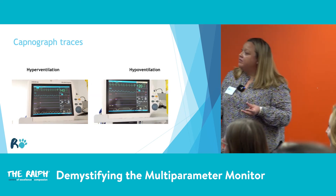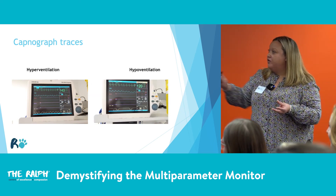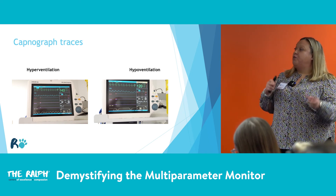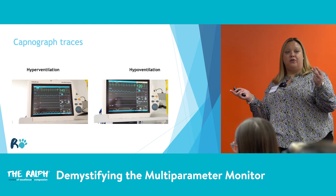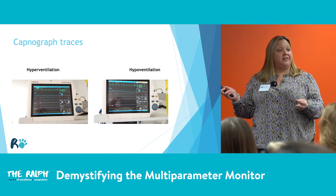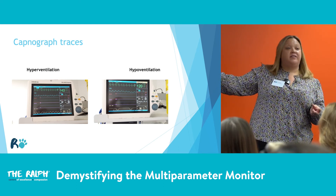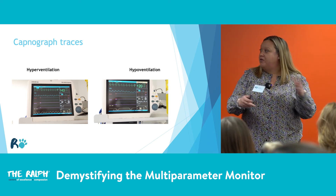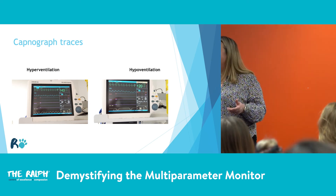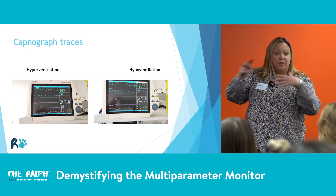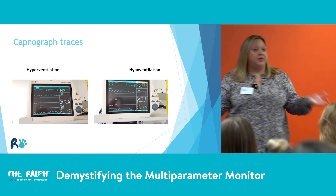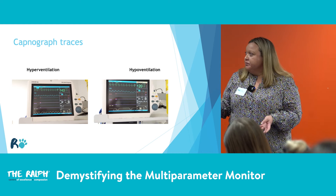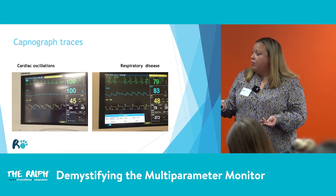A bit more on hyperventilation and hypoventilation: the hypoventilation one isn't so severe, but depending on how long you've got these patients under anaesthetic, if you see it at the beginning you need to ask: is my patient a bit deep, am I doing something wrong, do I need to tweak things? On the other side, if my patient's light — if this is how they're reacting during clipping, how are they going to be for surgery? A bit more of those to consider.